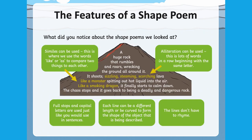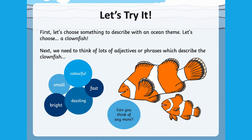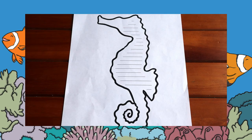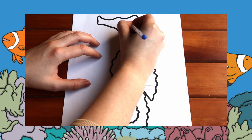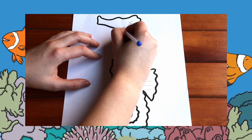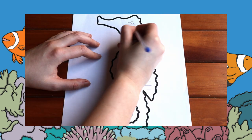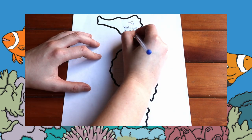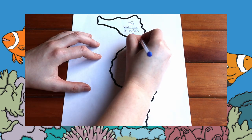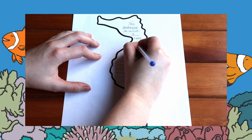Children could create ocean themed shape poems. This ocean shape poem PowerPoint will explain to children what a shape poem is, the features it includes, and how to create their own based on marine animals. You can also use the ocean movement cards from the PE lesson to aid children in their description of the various marine animals.